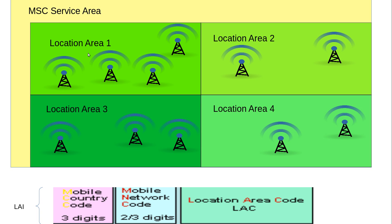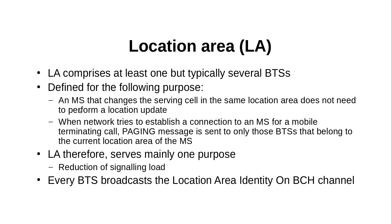Now, how are these location areas identified? Each location area is given a location area code. The location area code makes these location areas unique within an MSC area. However, since mobile stations also roam into other operator areas or other countries, location areas must be made unique globally so that roaming is possible. To achieve this, you add the fields of mobile network code and mobile country code to the location area code. This combined identifier is now called the location area identifier, and the location area then becomes unique globally.